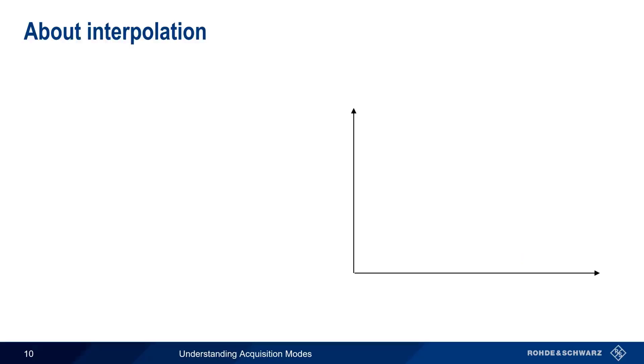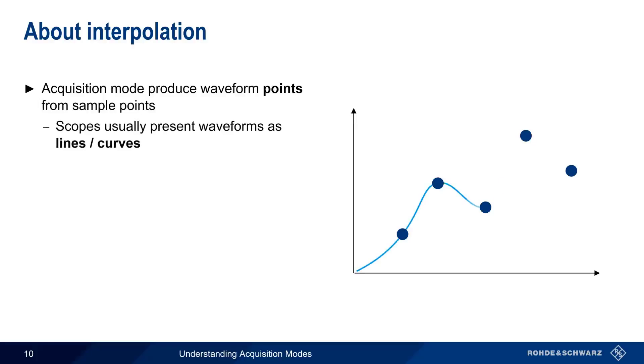We'll start with interpolation. Recall that the acquisition mode determines how waveform points are created from sample points. But oscilloscopes usually present waveform data to the user in the form of a line or curve, since most humans find it easier to visualize or interpret data in the form of continuous lines, rather than as discrete points.